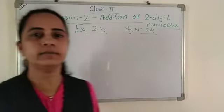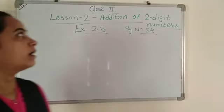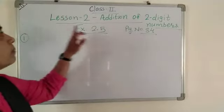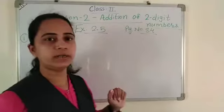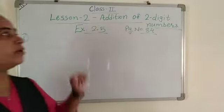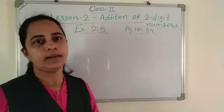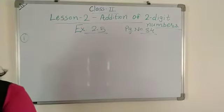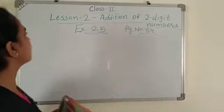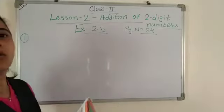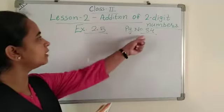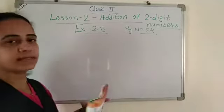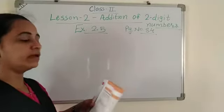Good morning children. Today I will explain lesson number 2, addition of 2-digit numbers, Exercise 2.5, page number 84. First, open your textbook to page number 84, Exercise 2.5.